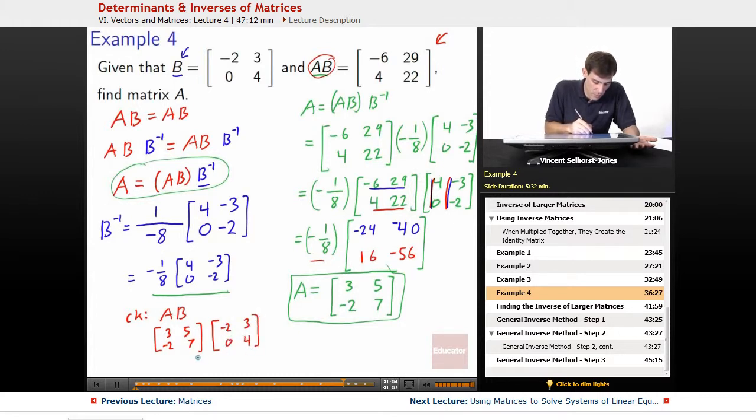The 3, 5 on negative 2, 0, that's going to get us negative 6. 3, 5 on 3, 4 is going to get us 9 plus 20, so 29.